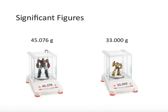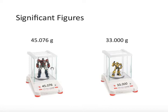The best way of understanding this is with another example. We have one action figure that weighs 45.076 grams — this has five significant digits. Using the exact same scale but a different action figure, let's imagine this one has a mass of 33.000 grams. Because we're using the same scale, it has to have a similar number of significant digits. These zeros would be considered significant because this scale has the ability to measure three decimal places, and the scale is telling us that those three decimals are all exactly zero.